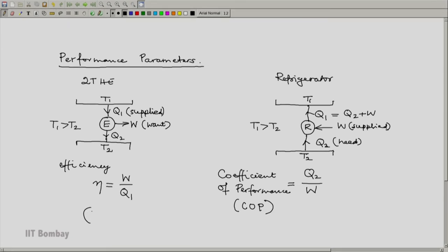Again, you will notice that the Kelvin-Planck statement of the second law dictates that this efficiency can never be 1—it has to be less than 1. Similarly, we know that here W cannot be 0, so the COP has to be a finite number.